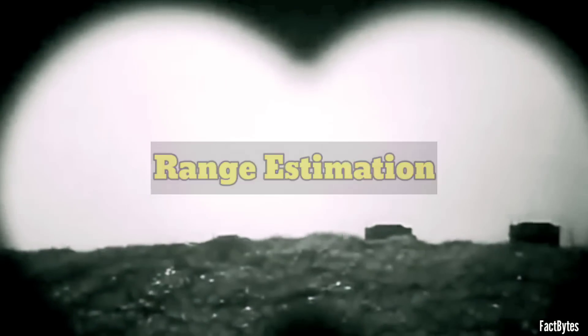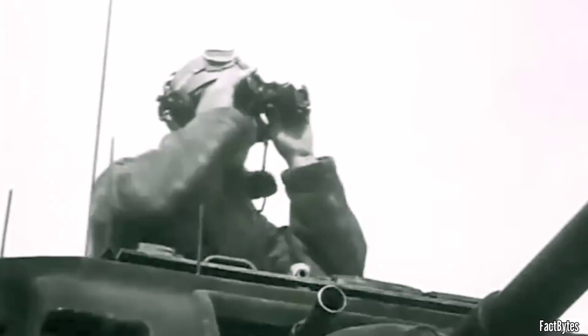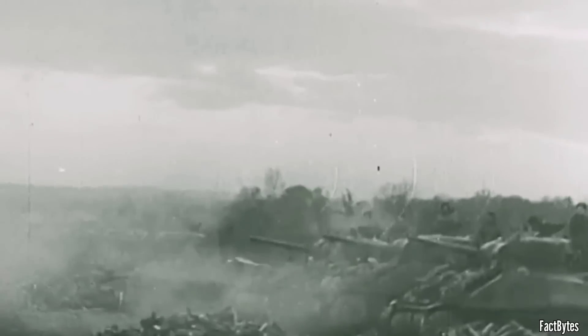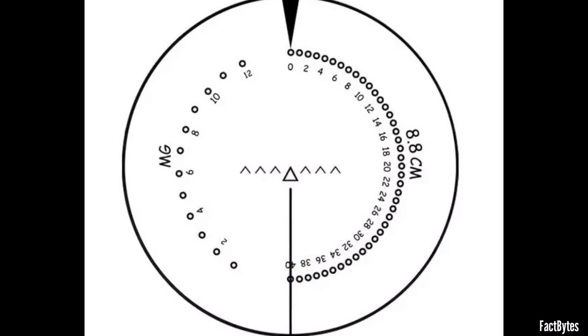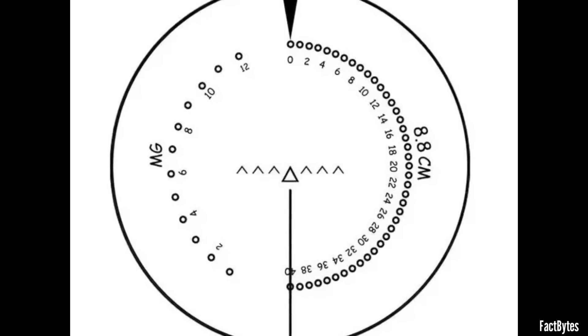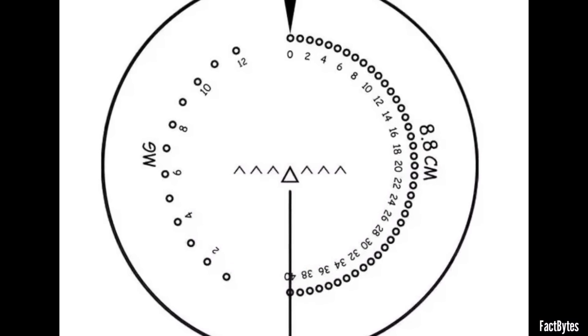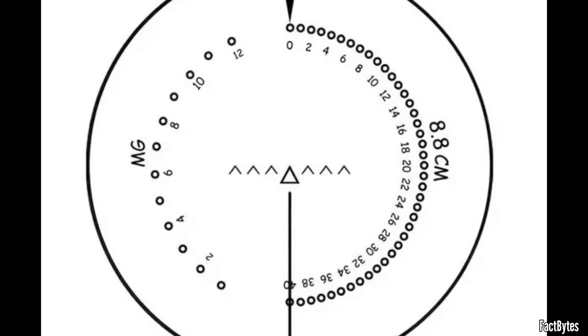During World War II, hitting distant enemy targets with a tank gun demanded precise range estimation. Without advanced computerized fire control systems, tank gunners relied on quick and accurate range estimation using both mathematical calculations and tank optics to achieve success. The reticle of the Zeiss gun sights comprises two prominent features. The reticle includes three graduated range scales imprinted around the circumference of the lens. Each scale corresponds to a specific type of ammunition.